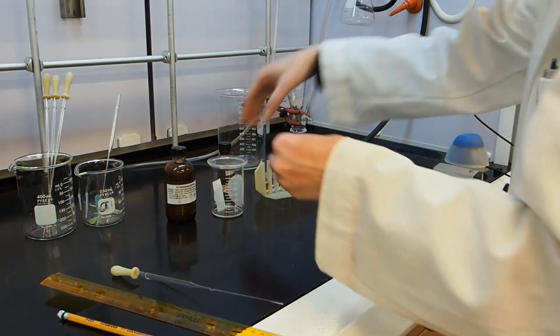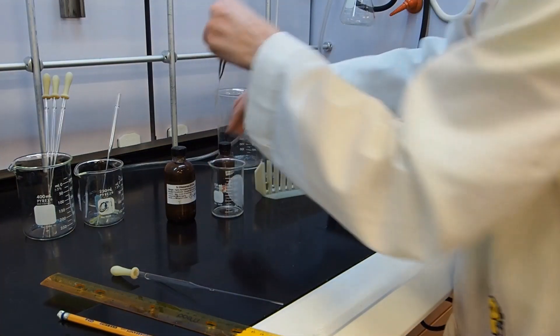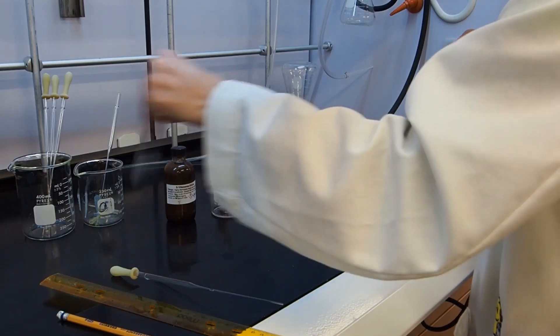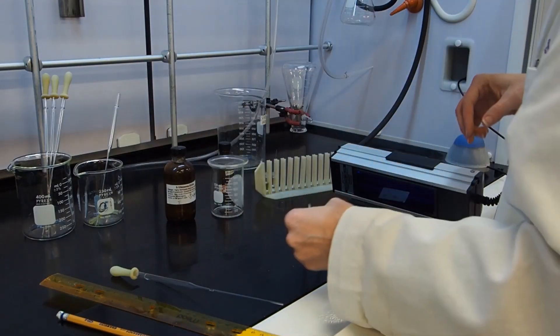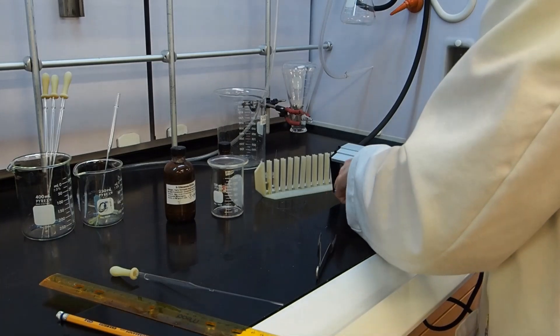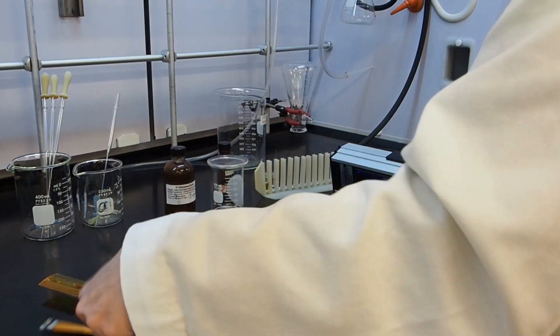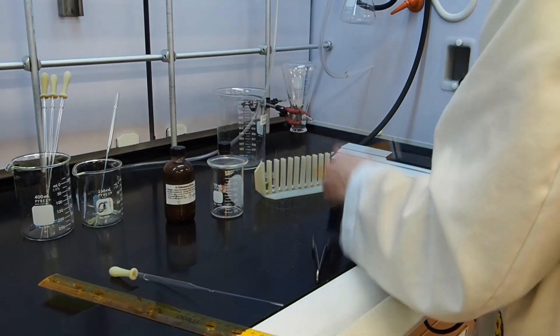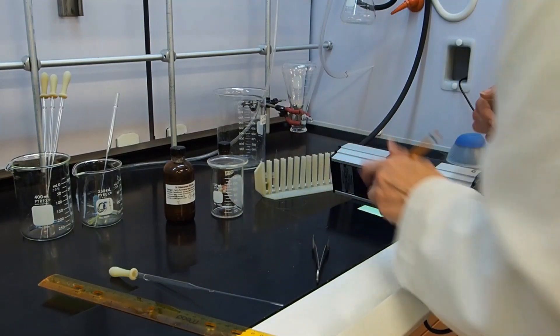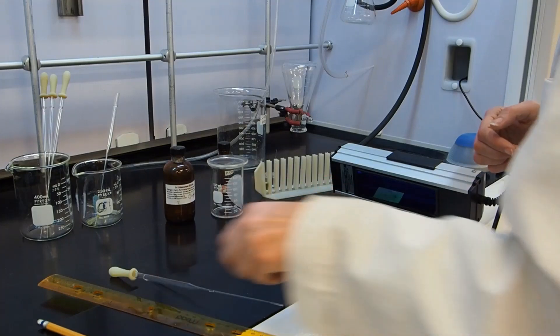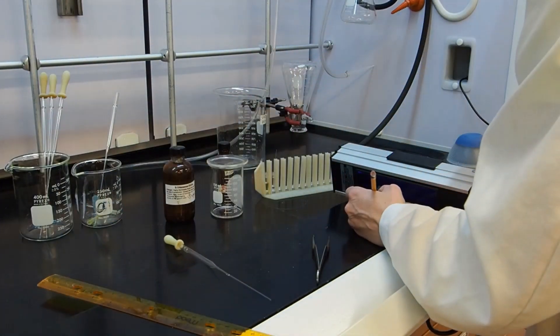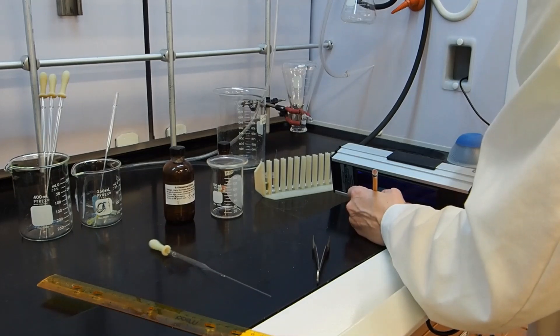The TLC has finished running, so I'm going to retrieve it from the chamber and let it dry. I'll draw a line where the solvent was. Then I'm going to look at it under the UV lamp and circle my spots. I can see there's a very low spot for the p-cresol.